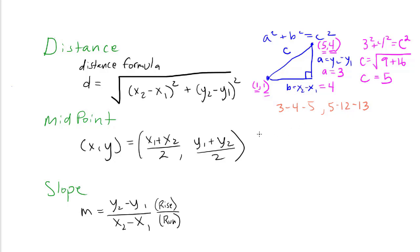Next concept: midpoint. On a number line, the midpoint is the point exactly between two points — mathematically, we calculate that as the average of the two points. Well, the Cartesian coordinate system is just two number lines, one vertical, one horizontal. If we want to find the midpoint, that is the x and separately the y coordinates that are the midpoints, we calculate the average for the x's and the average for the y's.